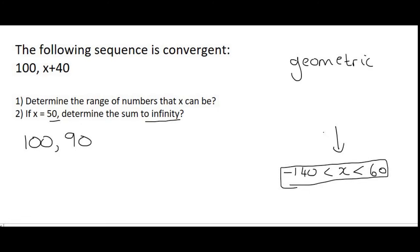So if x is 50 which is in between those two numbers then it's going to be convergent. So we are allowed to use the sum to infinity formula which we saw in the previous video goes like that.